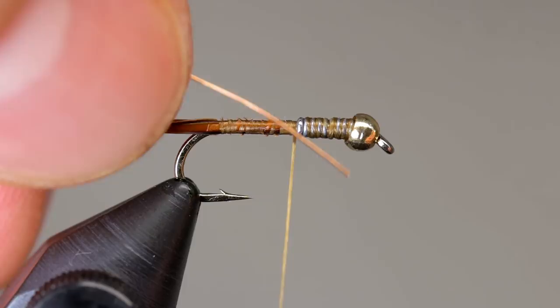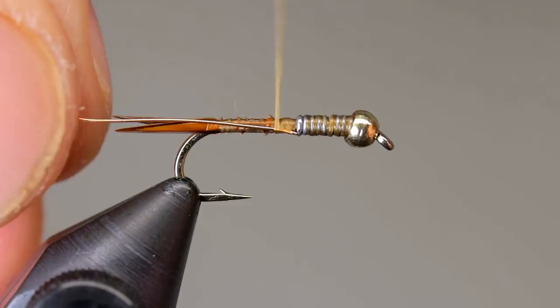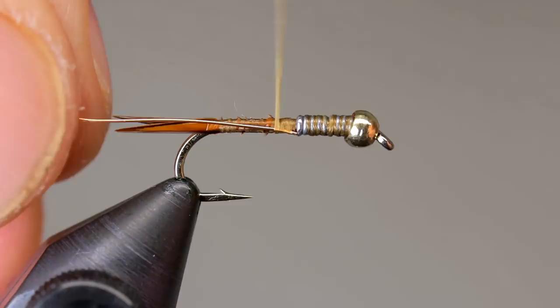The abdomen is formed entirely from copper wire. Place a piece of wire on the hook longer than you will need, and after a couple of wraps, pull it until the end also butts up against the lead wire. Secure the wire by moving the thread back to the tail.